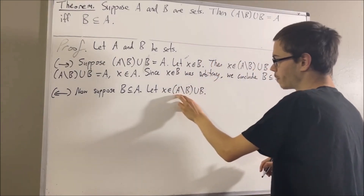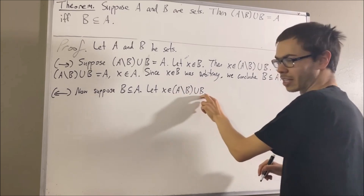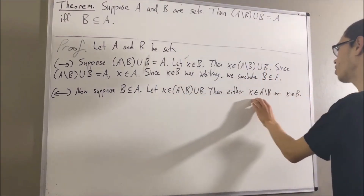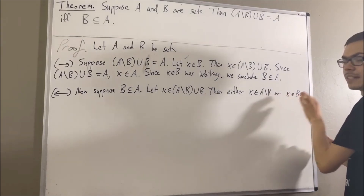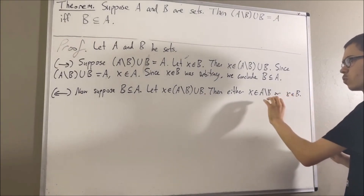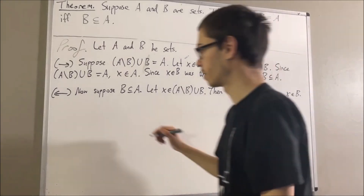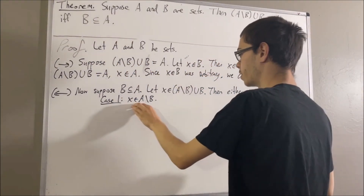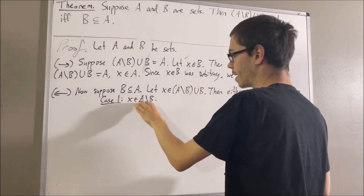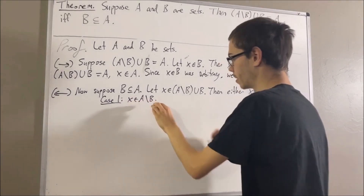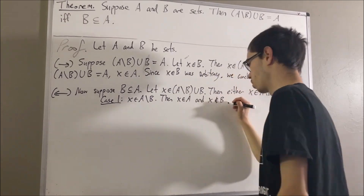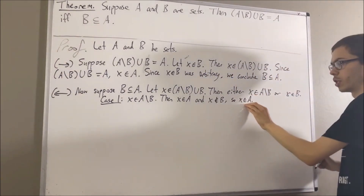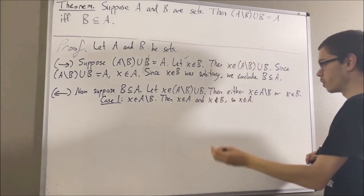Now, either X is an element of A set minus B, or X is an element of B. In either case, we're going to show that X is an element of A. Let's start with case 1, where X is an element of A set minus B. Well, what this means is that X is an element of A and X is not an element of B. So X is an element of A — and that's exactly what we wanted to prove. That completes case 1.